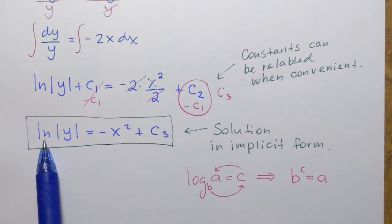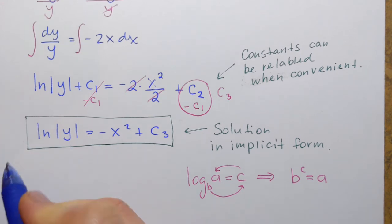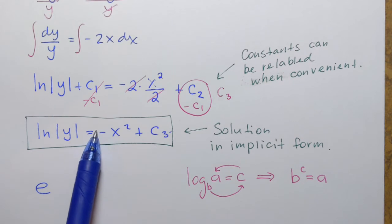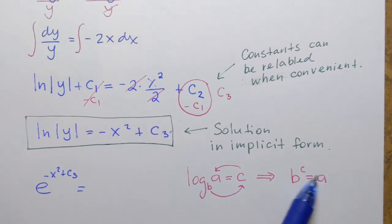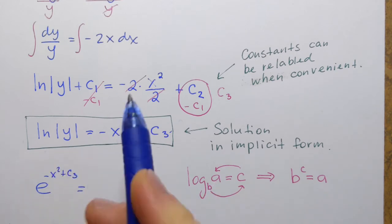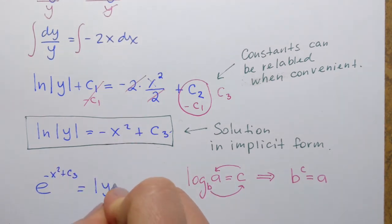So, let's try it. What is the base of this logarithm? Well, ln is the natural logarithm. Its base is number e. e raised to this power, this is the whole expression is the power. Power negative x squared plus c3 equals to what stands inside the logarithm. So, in this case, absolute value of y. Here it is.